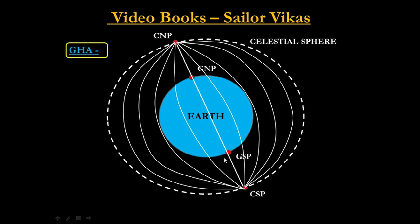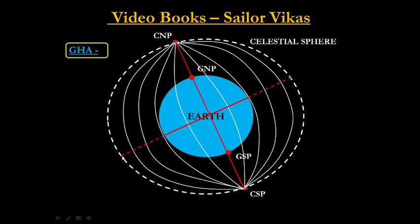As the word suggests, 'Greenwich' — let me take a celestial meridian which is passing through the Greenwich location on the earth. This red line you can see is passing through Greenwich. Now let me bring the equinoctial. This is the equinoctial of the celestial sphere. We know that this equinoctial is a great circle because it is passing through the center of the earth. If I take a part of this equinoctial, I can call it an arc.